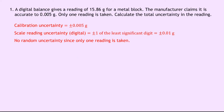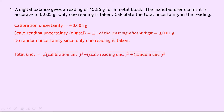We can then use our relationship for the total uncertainty, which is equal to the square root of the calibration uncertainty squared plus the scale reading uncertainty squared. And you'll notice I've scored out the random uncertainty because we don't need it. This is equal to the square root of 0.005 squared plus 0.01 squared, which is equal to plus or minus 0.02 grams.